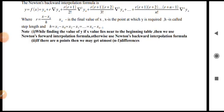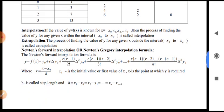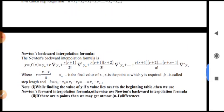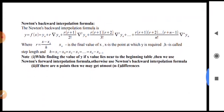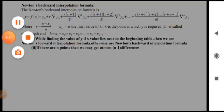The second note: if there are n points, that is n sets of x and y values, then we may get at most n minus 1 differences. For example, in the above example there are four sets of x and y values, so we get at most third differences, which we observed. If there are five points we may get at maximum four differences. We need to remember both Newton's backward and forward interpolation formulas to work out problems. In the next video we shall see how to work out the problems. Thank you.